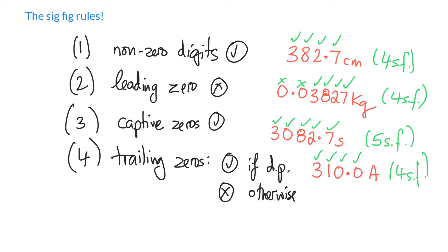Otherwise, trailing zeros are not counted. For instance, a number like 300 or 3100 amperes — the 3 and the 1 count, but the zeros to the right of the number are not counted because there is no decimal point. There is an implied decimal point, but if it is not physically written out, it is not counted. So 3100 would have just two significant figures.